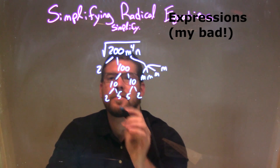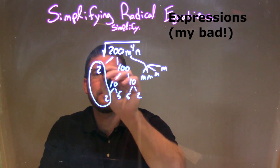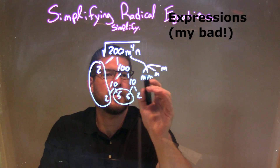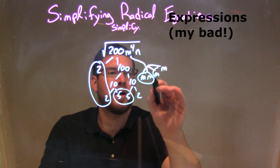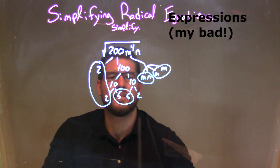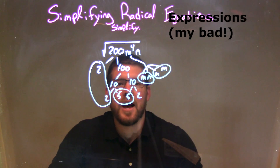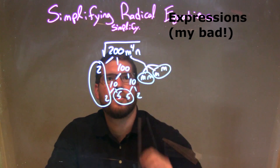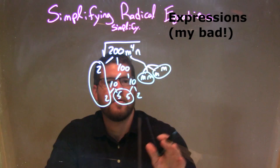So now let's circle our pairs. A pair of 2s right there, a pair of 5s right here, and a pair of ms, and another pair of ms. Now I've circled my pairs, and I recognize my loners, which are the 2 and the n — the singles.